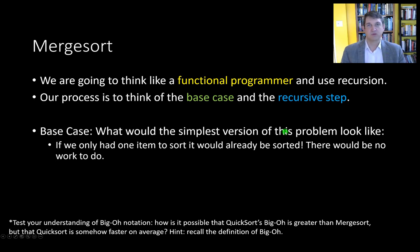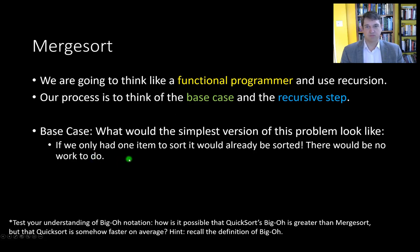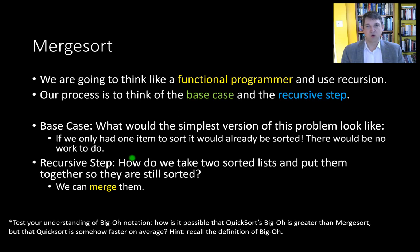Let's start developing merge sort. We're going to think like a functional programmer and use recursion. Our usual process is to think of a base case and then the recursive step. The base case is going to be the simplest version of the sorting problem — a list with only one element. To sort a list with just one element requires no work. For the recursive step, we take that single element sorted list and expand to grow our problem size.